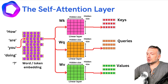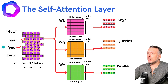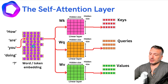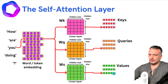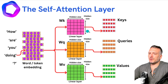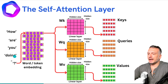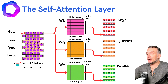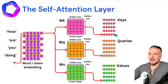We can repeat the process for all the tokens in the input sequence. The word U will have its vector representation in the token embedding, generating a new set of keys, queries, and values. Similarly, we take the word 'doing', get its vector representation, and by passing through the three different linear layers, we get a new key, query, and value. We take the last token in the input sequence, get its vector representation, and get its key, query, and value.